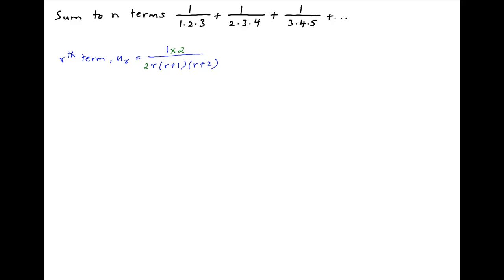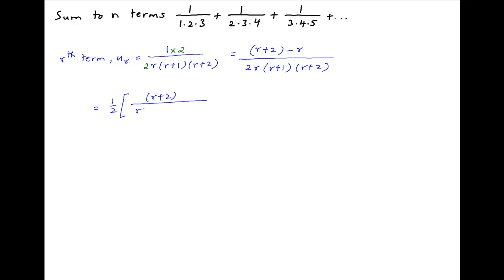Now multiply and divide by 2, and this can be expressed as r plus 2 minus r in the numerator, divided by 2r times r plus 1 times r plus 2. This is equal to half of, in brackets, r plus 2 divided by r times r plus 1 times r plus 2, minus r divided by r times r plus 1 times r plus 2.